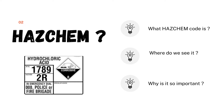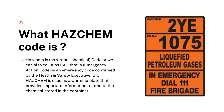HAZCHEM code stands for Hazardous Chemical code, and we can also call it EAC, that is Emergency Action Code. HAZCHEM code is an emergency code which is confirmed by the Health and Safety Executive of UK. It is used as a warning plate that provides important information related to the chemical stored in the container.